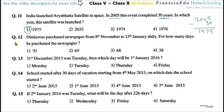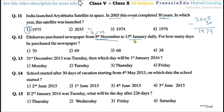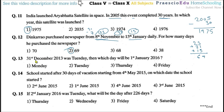Question number twelve: Dinkar Rao purchased a newspaper from 8th November to 15th January daily. For how many days did he purchase the newspaper? November: 30 minus 7 equals 23 days. December: 31 days. January: 15 days. Total: 23 plus 31 plus 15 equals 69 days. Option number two is correct.